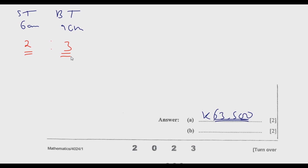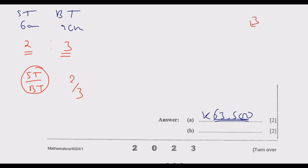The ratio of the volumes of the two tins will be (small tin)/(big tin) = 2/3, but because it's volume, we need to cube the ratio. Remember, for volume you multiply a length three times — like L³. So the ratio of the volumes equals (2/3)³, which gives the volume of the small tin divided by the volume of the large tin. When dealing with geometrically similar shapes, you cube the side ratios to get the volume ratio.